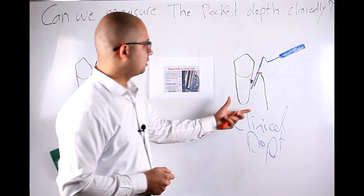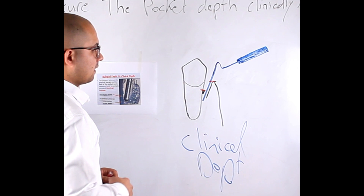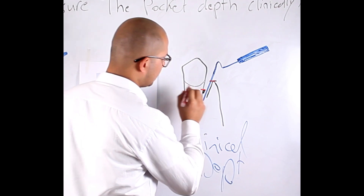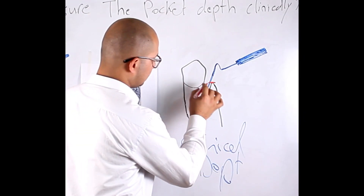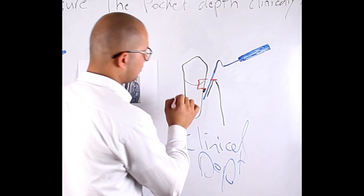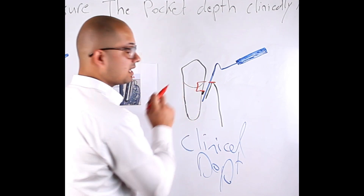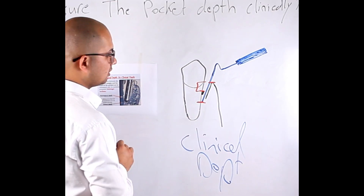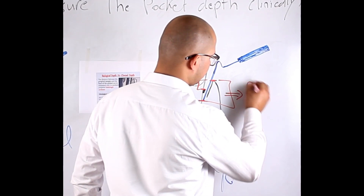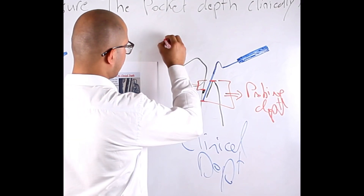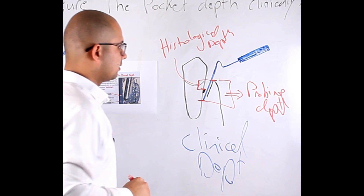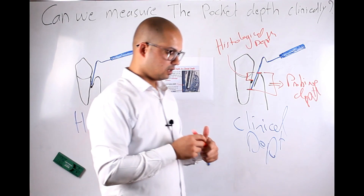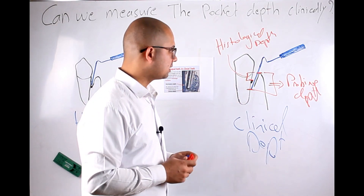If you look closely at this image, this is the base of the pocket and this is the gum margin. The pocket depth, or histological depth, is that distance. But unfortunately, we pass that point — we can't stop there. We stop further in, so that greater distance is called probing depth, while the shorter distance is called histological depth or pocket depth.